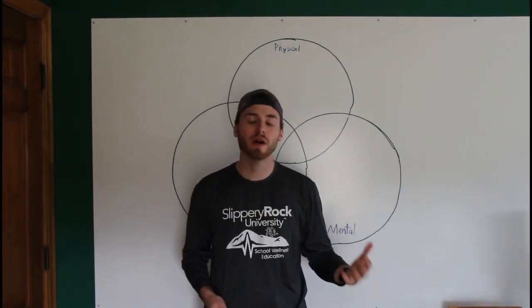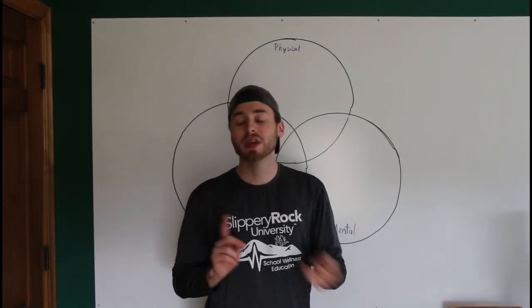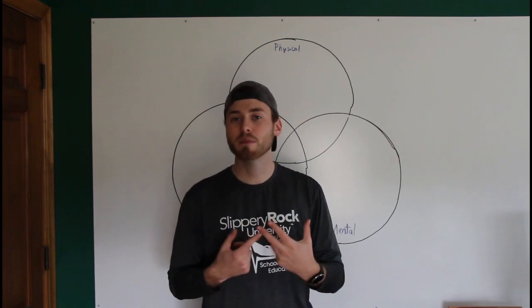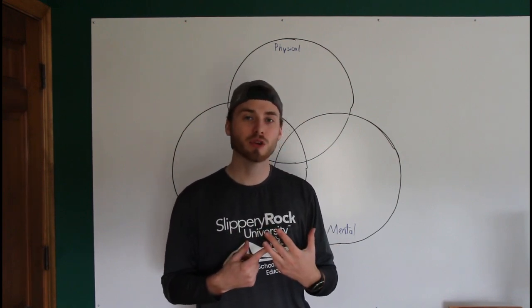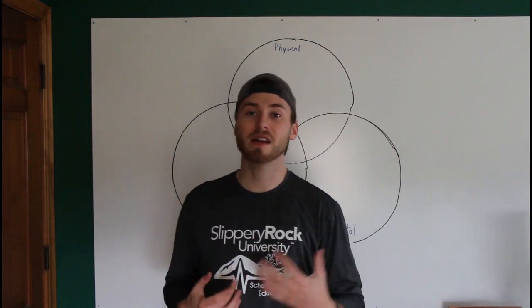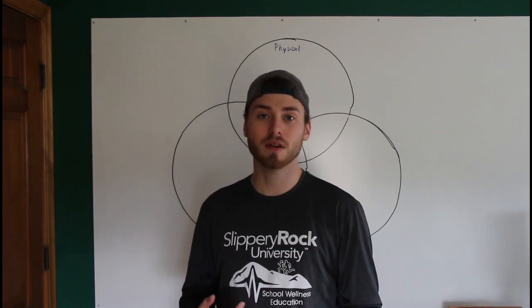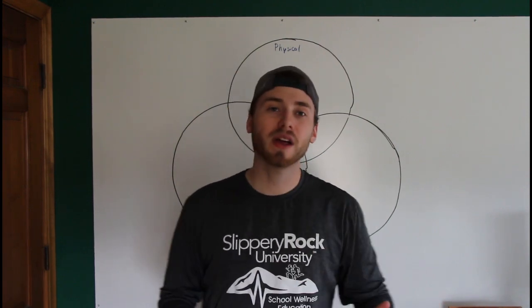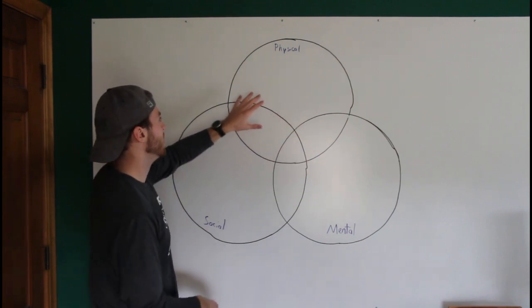As I said at the beginning of this video, well-being isn't just about being physically well. It's not about being mentally well. It's not just about being socially well. It's about being all three and being a nice even blend of all three. So when I say an even blend, let's look at this Venn diagram that I have.